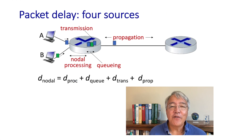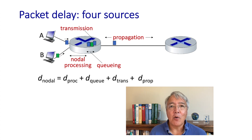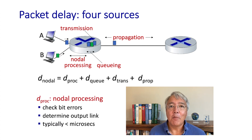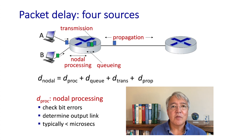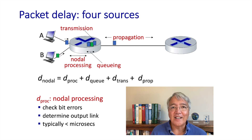Let's now dive deeper into four components of delay that can happen at a router. The first of these components is what we might call processing delay. This is the delay associated with forwarding table lookup, forwarding a packet through the switch, and doing some associated integrity checks. These delays are on the order of microseconds or less.